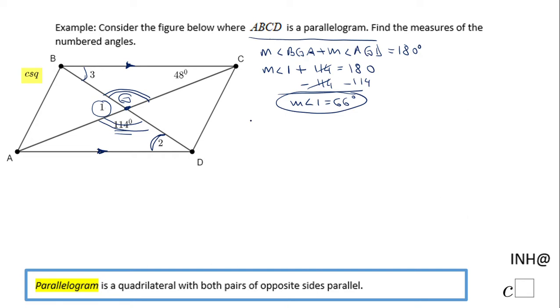I'm going to write that statement: angle BGC is congruent to angle DGA because they are vertical angles.